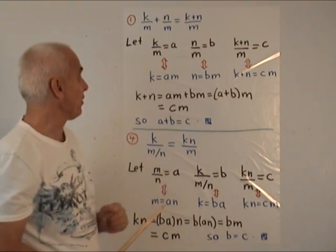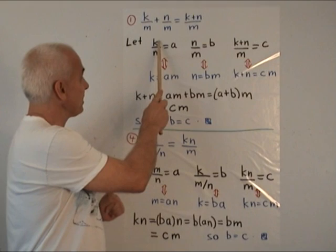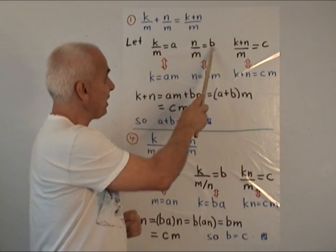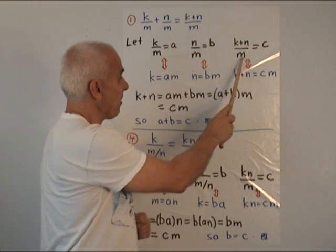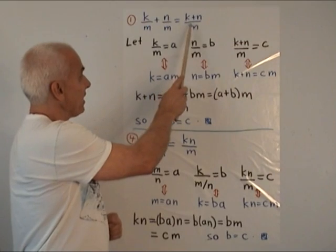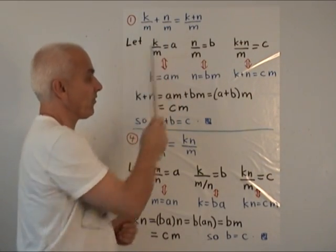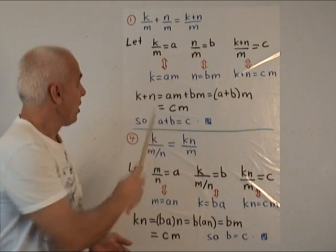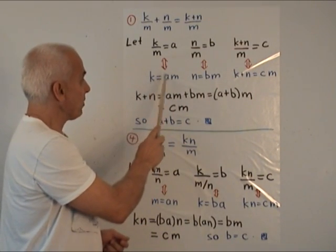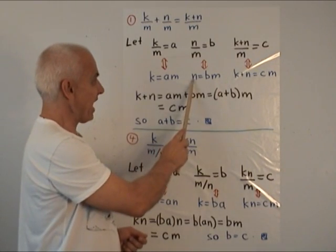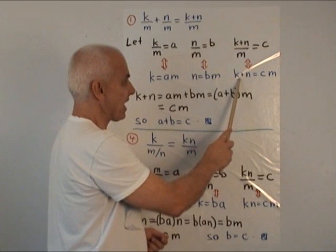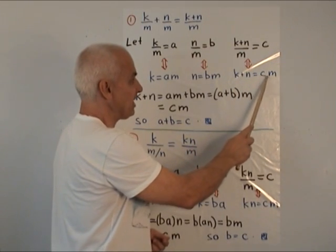We'll decide that k divided by m will be called a, that n divided by m will be called b, and that k plus n divided by m will be c. So that's a, that's b, that's c. And we want to prove that a plus b equals c. What do these various things mean? This one means that k equals a times m. This one means that n equals b times m. And this one means that k plus n equals c times m.